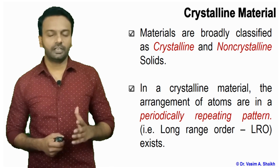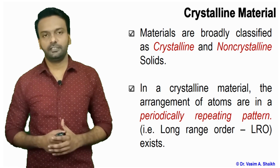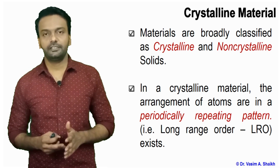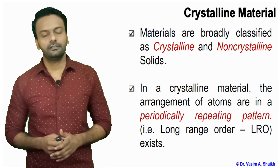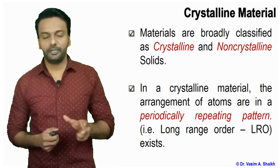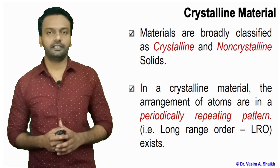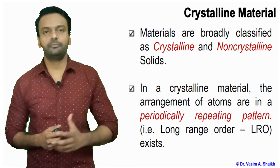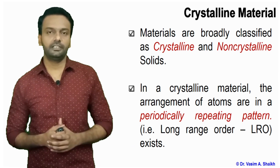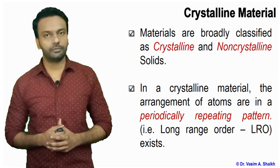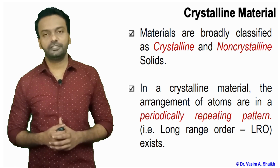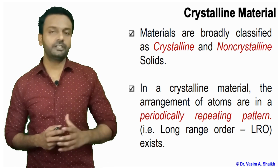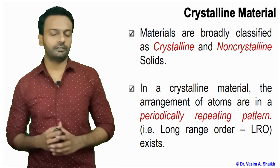In the upcoming slides you will see that the atoms are arranged in a periodic manner. The smallest repeating unit, or the unit cell, repeats itself in a particular pattern. In crystalline material, this arrangement of atoms and the unit cell is in a long range order.